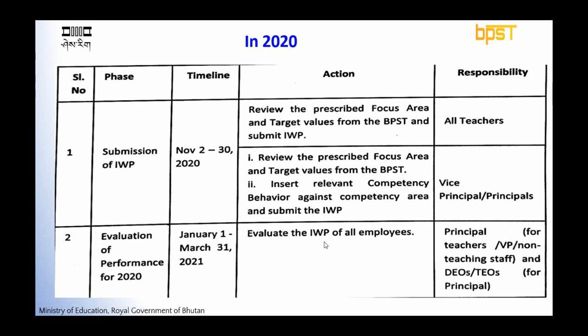This is the timeline for IWP submission and evaluation. For submission of IWP, the system will be open till 30th November. All teachers, vice principals, and principals need to submit the IWP on or before 30th November. For IWP evaluation, the system will be open from January 1st till 31st March 2021. Schools can start evaluation of performance for 2020 from 1st January 2021.